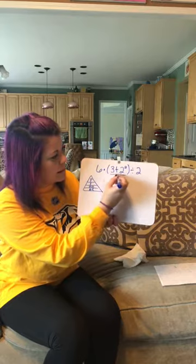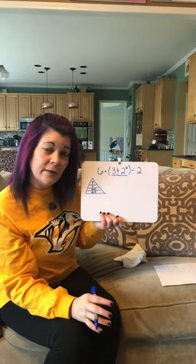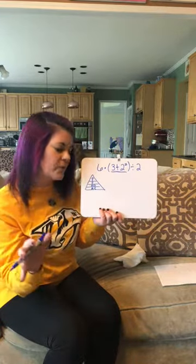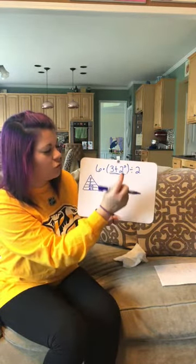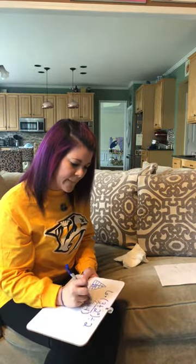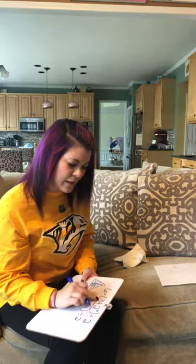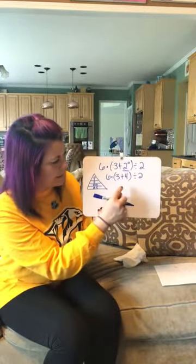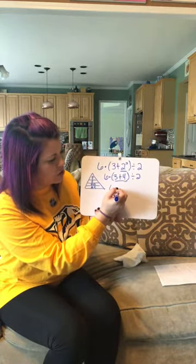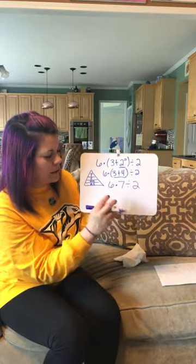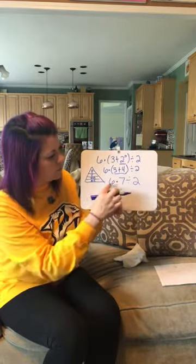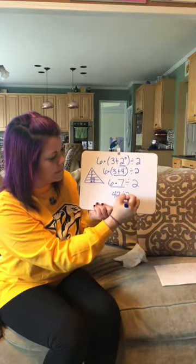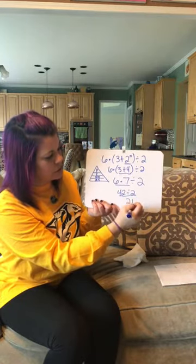P stands for parentheses, so we look inside first. Within the parentheses we apply order of operations: exponents come first, so we do 2 squared equals 4. Rewriting: we still have parentheses, and now 3 plus 4 is 7, giving us 6 times 7 divided by 2. Multiplication and division are on the same level, so left to right: 6 times 7 is 42, then 42 divided by 2 is 21. That's your answer.